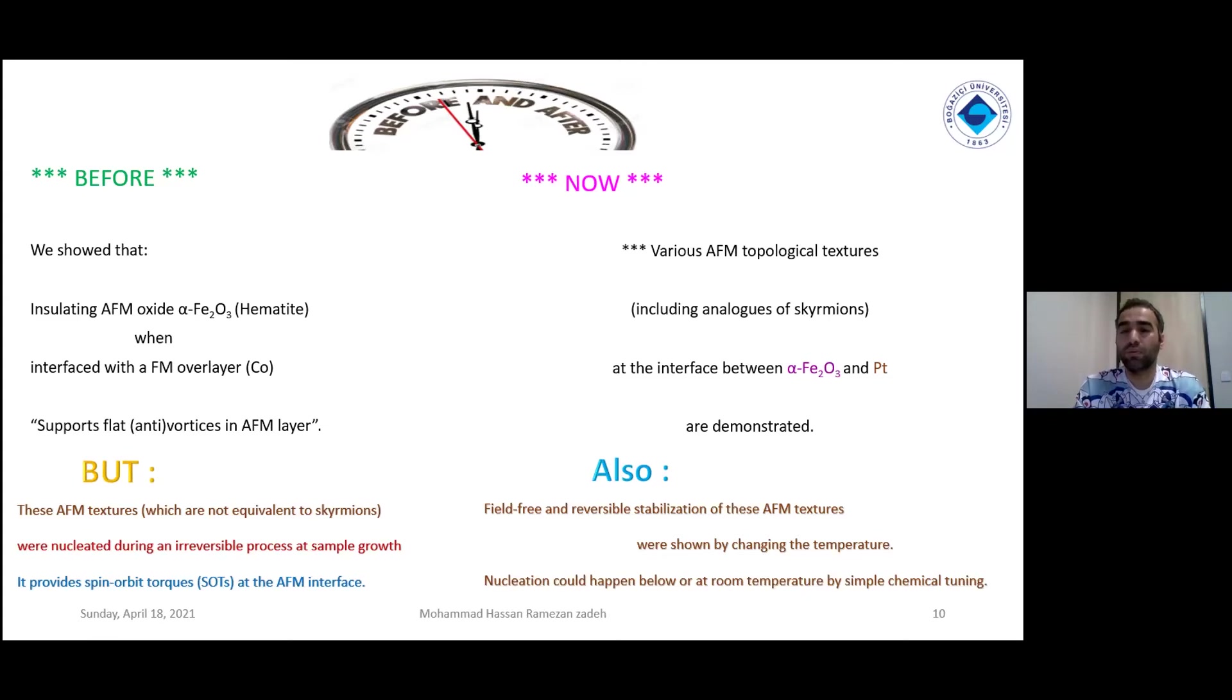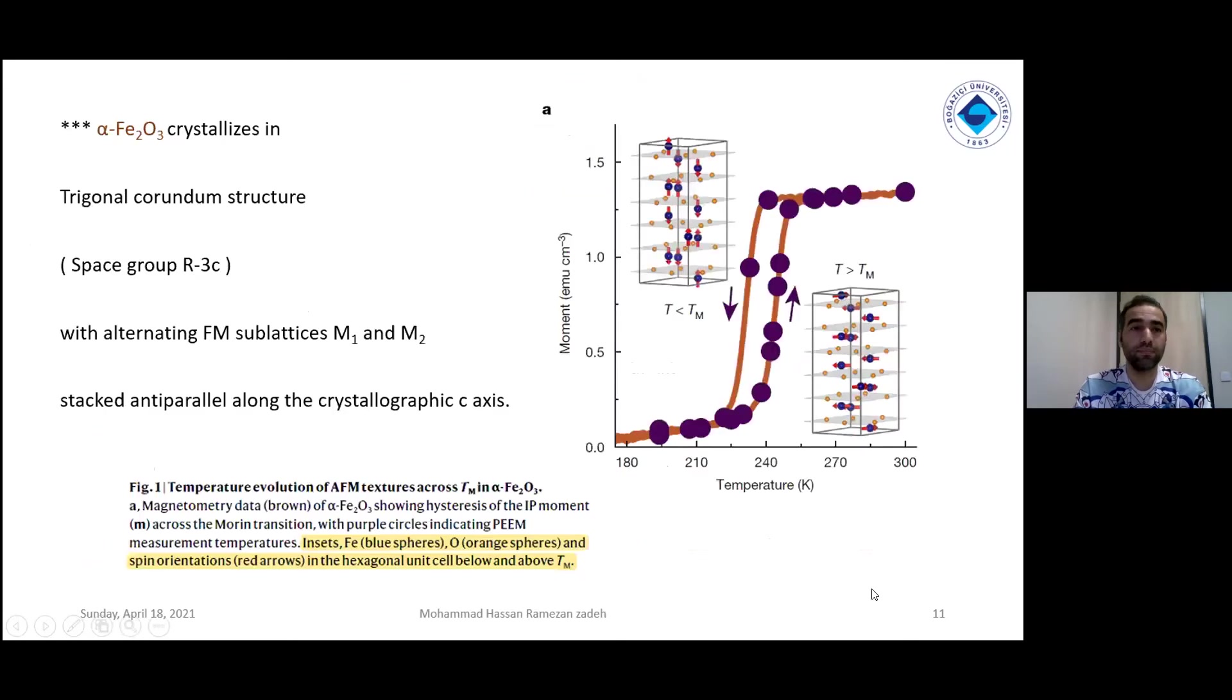But now what they want to do - they are trying to investigate different antiferromagnetic topological textures, including some analogues of skyrmions. They are using hematite and platinum overlayer, field-free and reversible stabilization of these antiferromagnetic textures. They change temperature to see what will happen. The nucleation happened below and at low temperature.